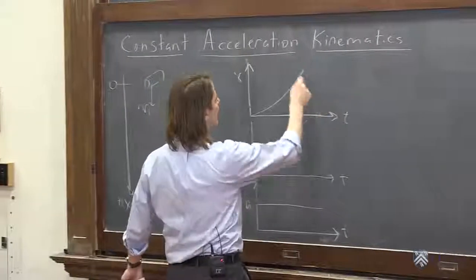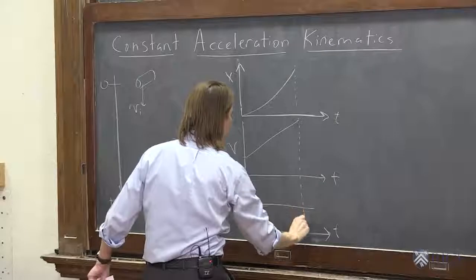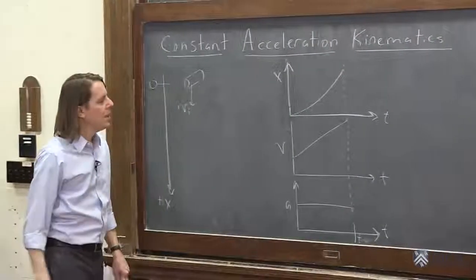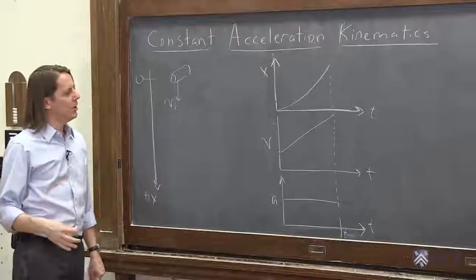And we know we're asking ourselves, how fast does it go after it gets to some time t? So we could say to this point t. Ran out of room there. There we go. So we're going to solve this graphically, but there's one thing we've got to remember.